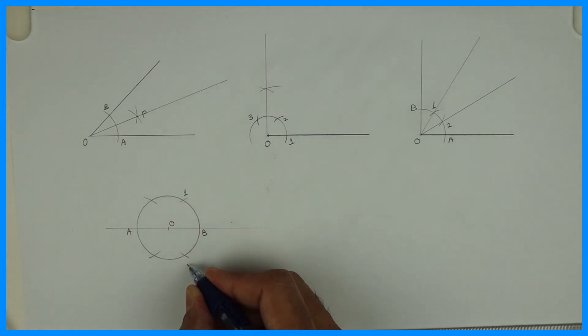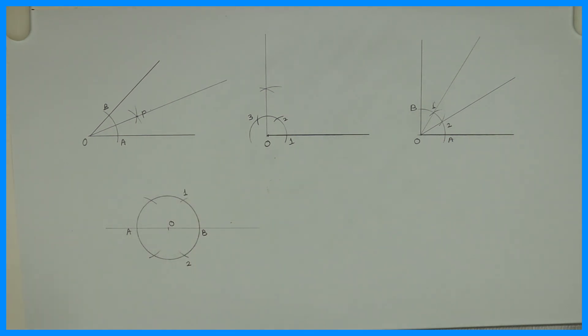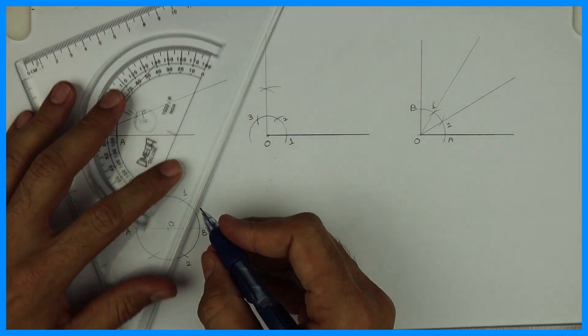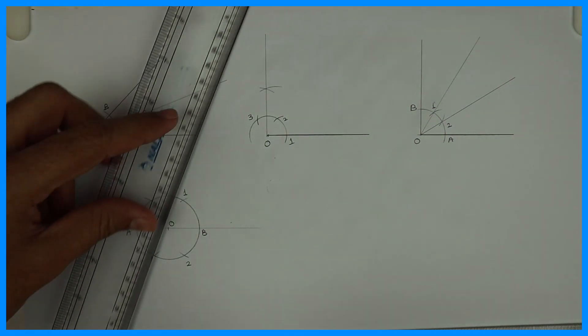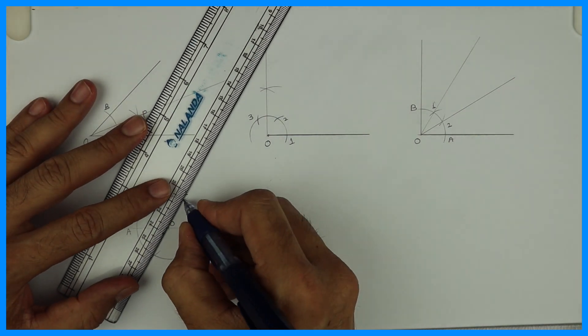But what you need to do, you need to join alternate points. Let's say A, 1 and 2. So if you do that, you'll get three parts. So you've divided circle into how many parts? Three parts.